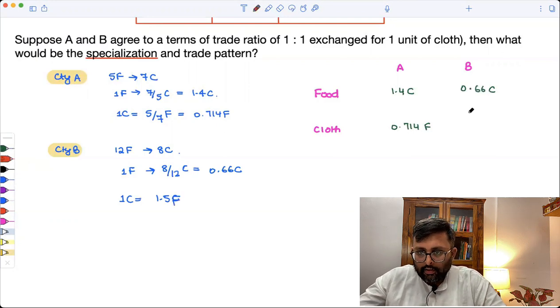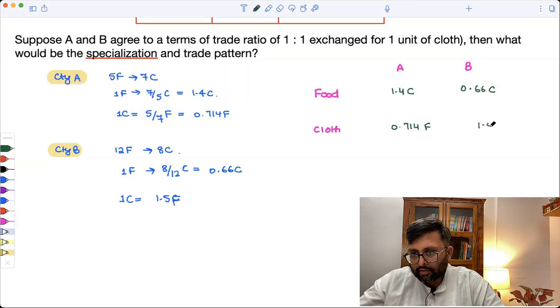And for country B the opportunity cost for cloth is just going to be 1.5F.